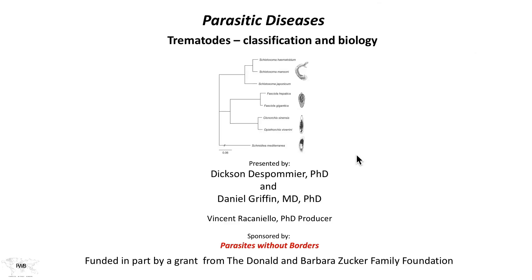Welcome to Parasitic Diseases. Today we begin our last section of Parasitic Diseases, the Trematodes. Today we'll discuss their classification and a little bit about their biology, but actually, as we work our way through the major trematode diseases of humans, their biology will be clarified as we get to individual specific examples. But first, let's find out who they are.